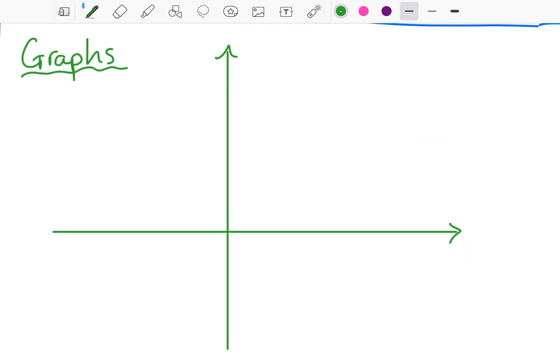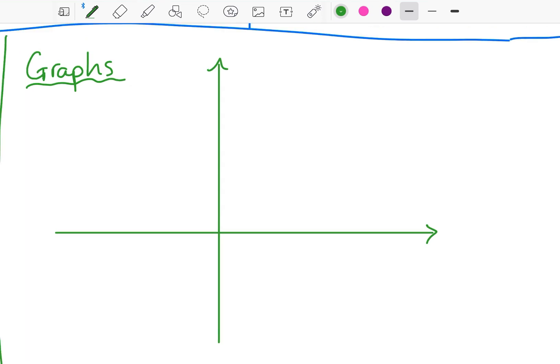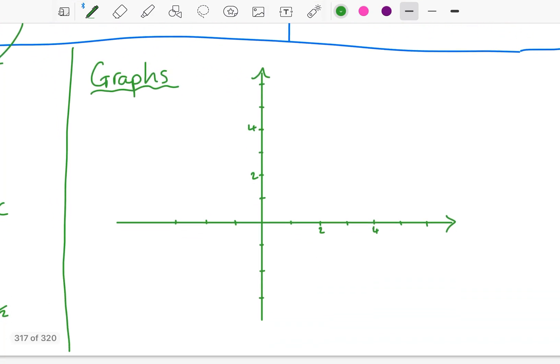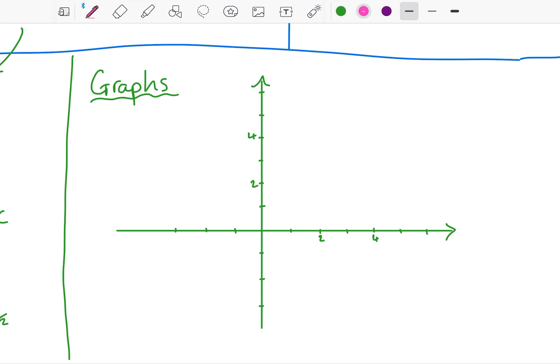And the final thing you need to know about inverse functions is their graphs. Let's have a little look. I've got one to six there. You can assume that each notch is just one. And I'm going to graph the function and the inverse function. Let's go with this linear one first.